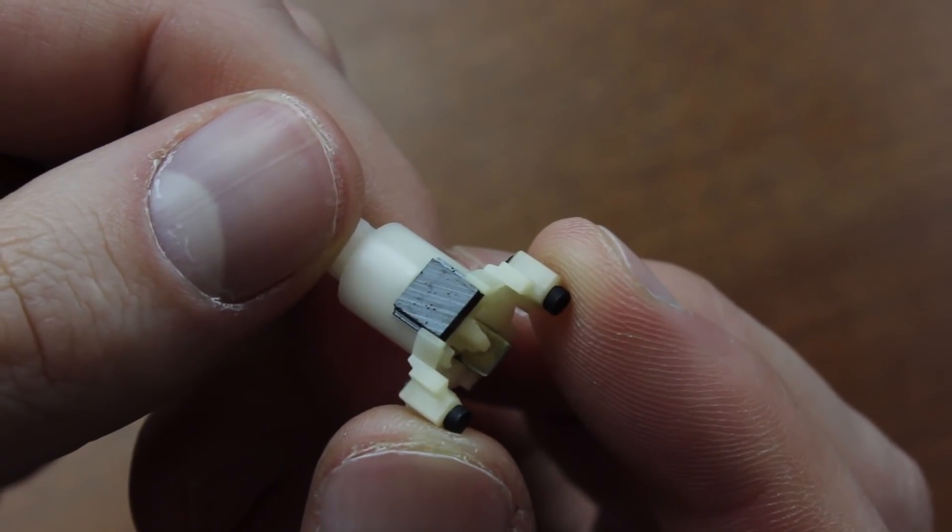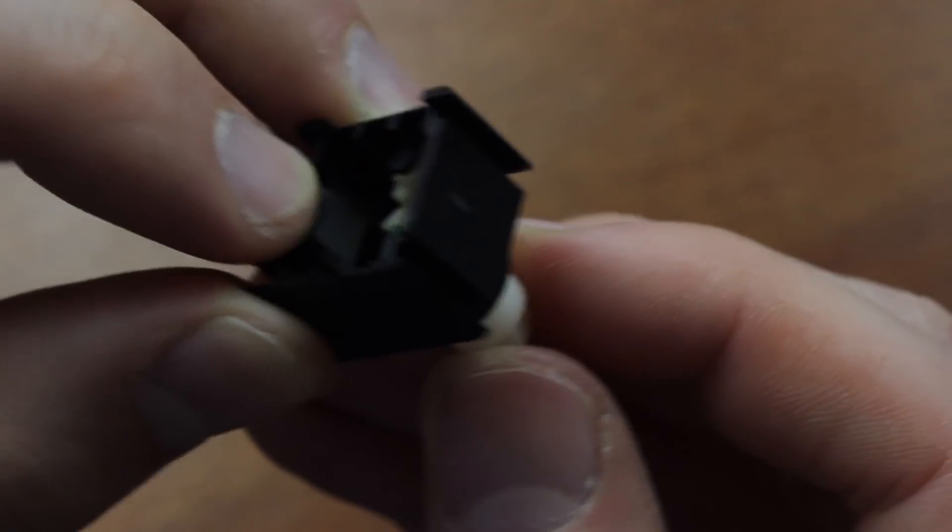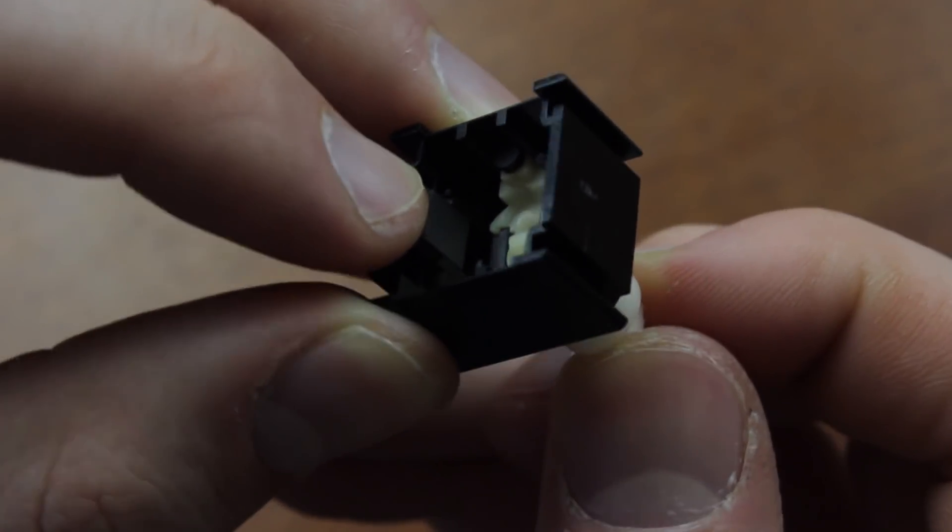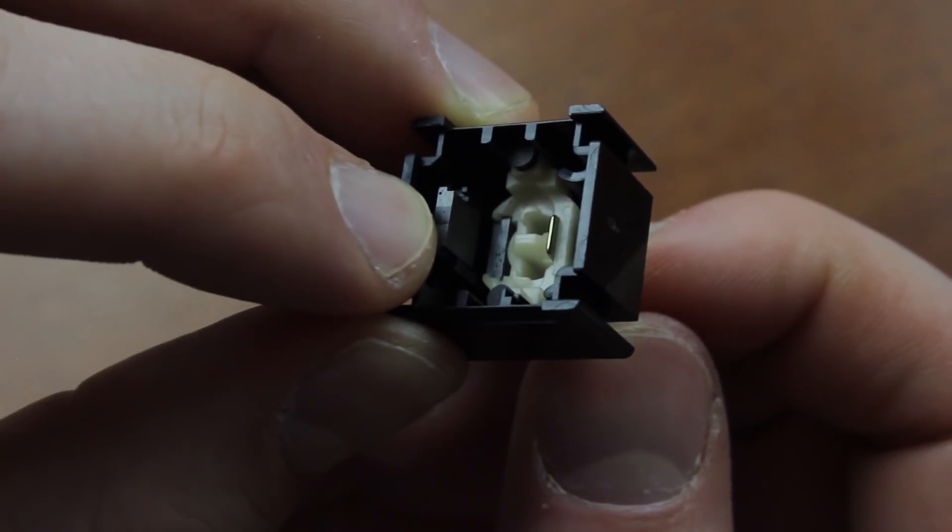One of the magnets is, again, embedded in the slider, and the other can move freely up and down in a track in the housing. It's aligned anti-parallel to the slider magnet, so by default it's repelled and kept in the downward position, because the slider is at the top, obviously.